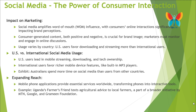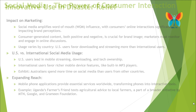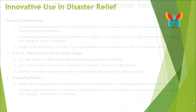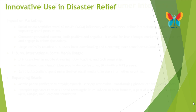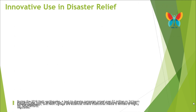Cinema, billboards, and neon signage are essential where traditional media is limited or highly regulated. Billboards work well in areas with high illiteracy rates, while neon displays dominate major city centers like Hong Kong and Tokyo. Multinational companies benefit from using agencies with global and local branches for consistent campaigns across markets.